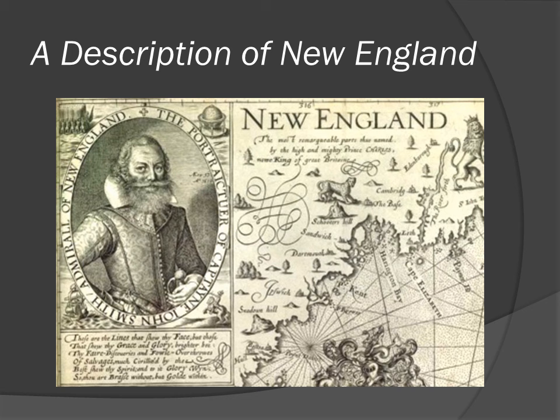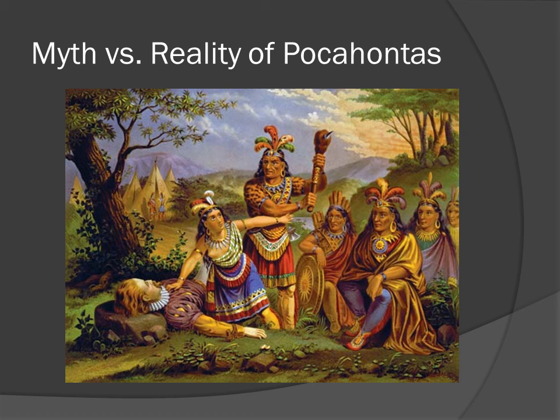The Myth vs. Reality of Pocahontas: In 1608, Smith first published his most famous adventure — his capture in Virginia by the Indians under Chief Powhatan — in A True Relation. In it he made no mention of Pocahontas. However, by 1624, seven years after Matacoa's death, he published the full details of this story. The story has become a well-known American legend of how Pocahontas rescued Smith from death at the hands of her father, Chief Powhatan.